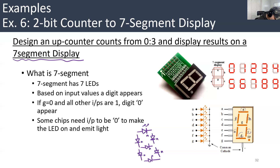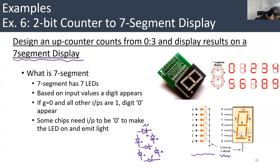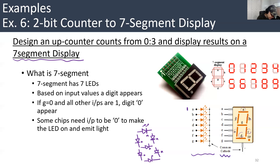Or you connect all the anodes to VCC, the higher voltage, and by putting zero or one to the cathode, you choose whether to light some LED or make it off. This is what's called the common cathode seven segment display, in which all the cathodes are connected to ground. Then if you put one on A, for example, this LED will emit light.